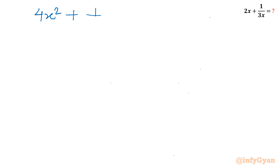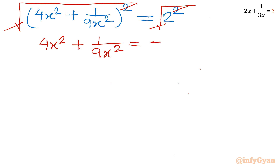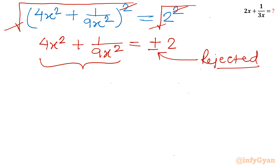So I can write (4x² plus 1 over 9x²) whole squared equals 2 squared. Taking square root of both sides, square root and power 2 cancel, leaving 4x² plus 1 over 9x² equals 2.